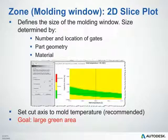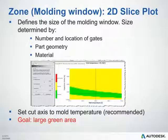After reviewing your summary pane, take a look at your 2D slice plot. The 2D slice plot basically shows you the size of your molding window. The size of your molding window will largely be dependent on the number and location of your gates, your part geometry, as well as the material you've selected. In this image, you can see we have a green band as well as some yellow bands. We want that green band, the preferred molding region, to be as broad or as thick as possible.